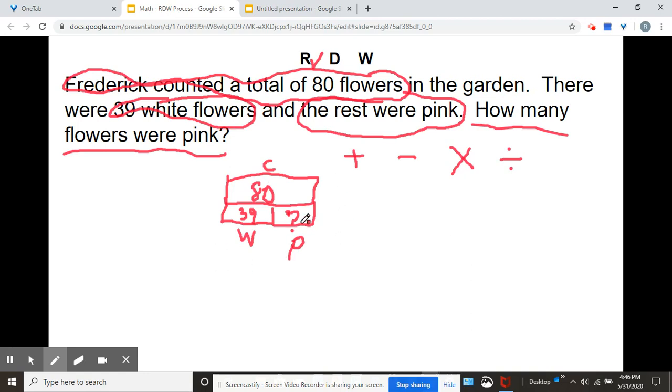Now, looking at the problem from the drawing and the problem, it sounds like it's a subtraction problem. It's not addition. We're not adding 80 and 39. It's not asking how many did he pick in all, right? They're saying he counted a total of 80 flowers. Part of it, 39 was white. The rest, we don't know.